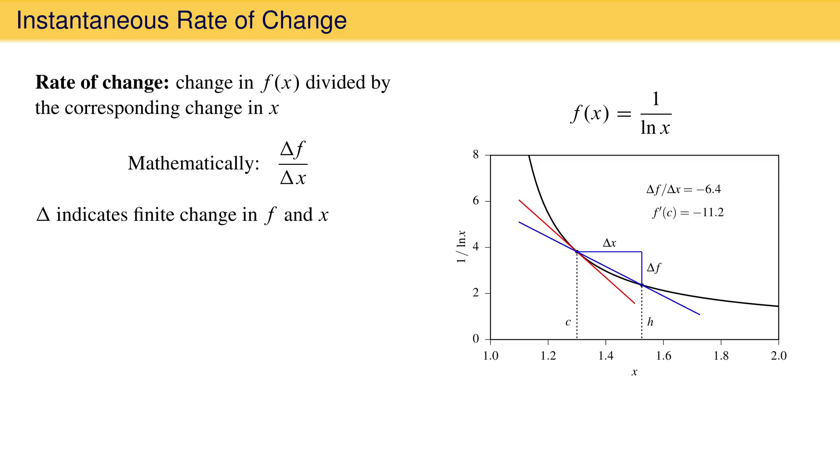If we move point h closer to point c, such that delta x is smaller, and recompute the rate of change at each point, notice that the rate of change gets closer and closer to the derivative at point c as delta x approaches zero. This is another, and a better, definition of the derivative.